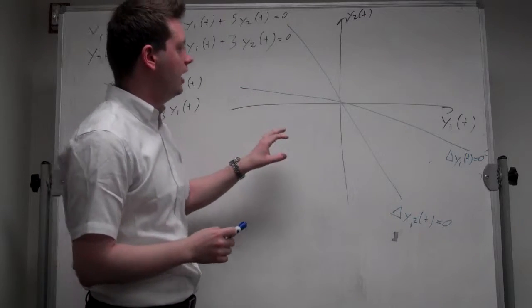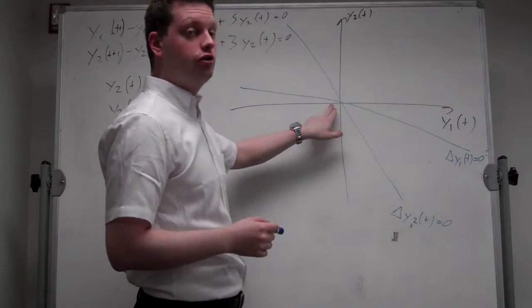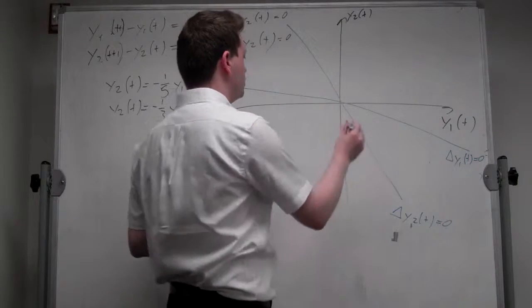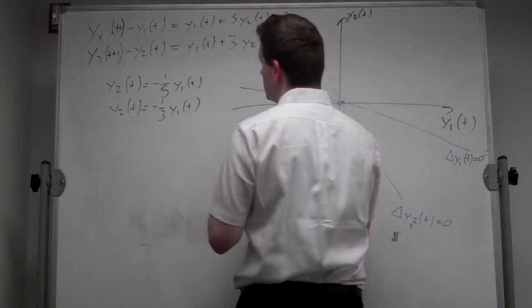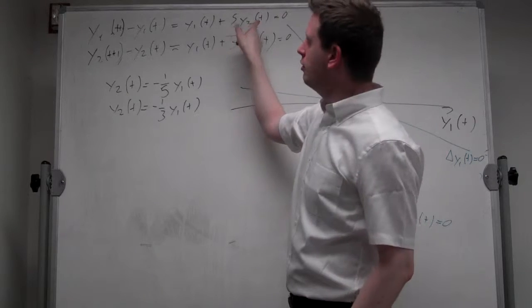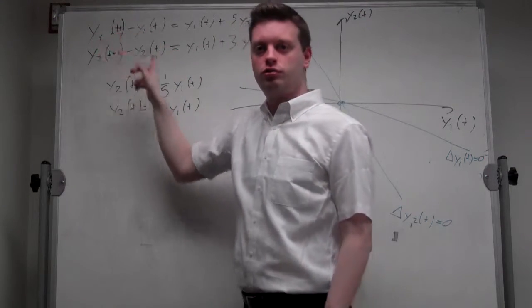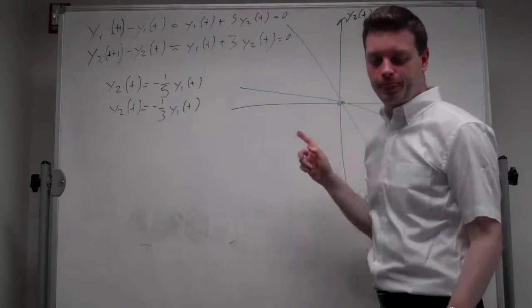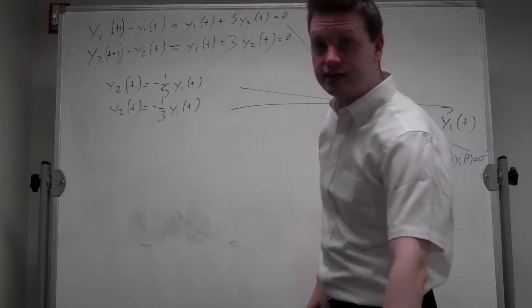Okay, now we also note that (0,0) is always a solution, because if y_1 is equal to y_2t is equal to 0, then this difference is also 0, so that's always a stable point. Okay, now let's get the dynamics.